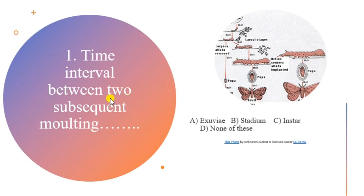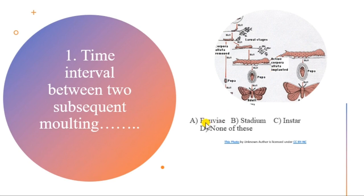First question: time interval between two subsequent molting. Molting means the insect grows by molting — from one stage to another, the insect has to shed the old cuticle and form a new one to accommodate the new body size. Exuvia is the old cuticle shed during molting, and instar is the new form obtained after molting. The time between one molting and another is called stadium.